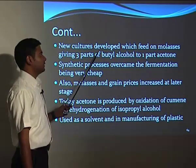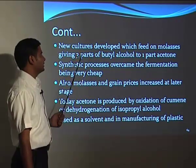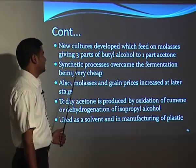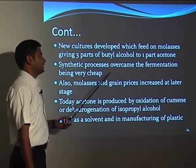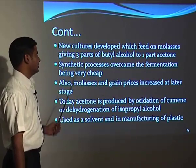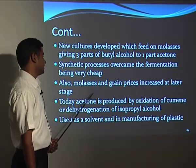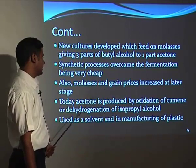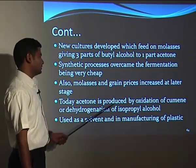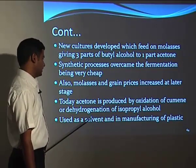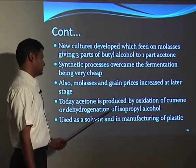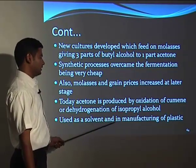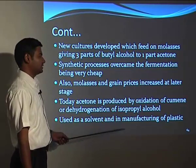A new culture was developed that feeds on molasses, giving three parts of butyl alcohol to one part of acetone. However, synthetic processes overcame fermentation by being very cheap. Additionally, molasses and grain prices increased at a later stage. Today, acetone is produced by oxidation of cumene or by hydrogenation of isopropyl alcohol, and is used as a solvent and in the manufacturing of plastics.